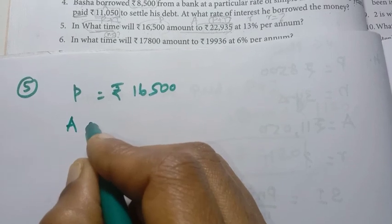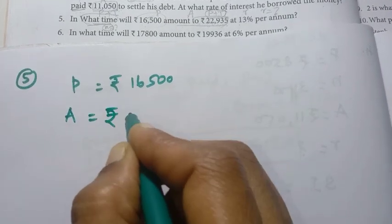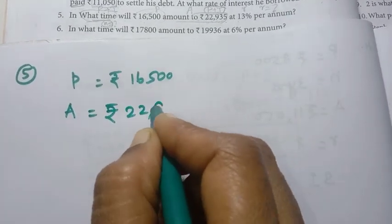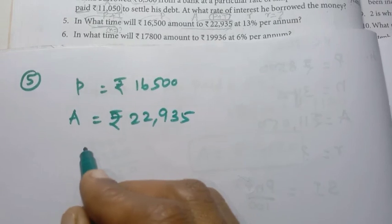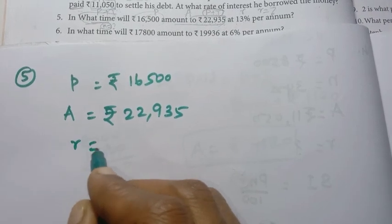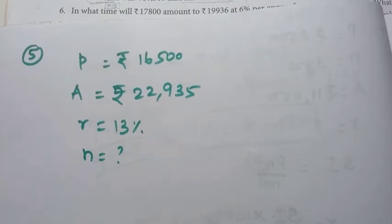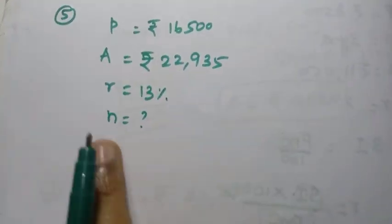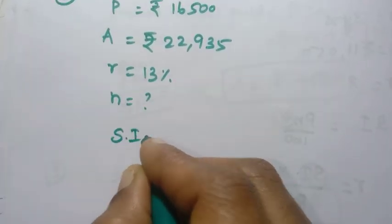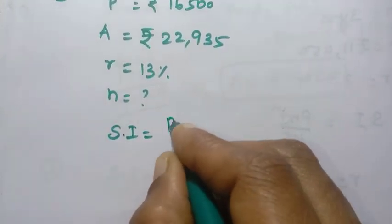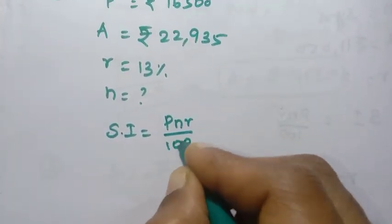Amount A equals rupees 22,935. Rate of interest is 13%. We need to find the number of years. The formula for simple interest is SI = PNR by 100.